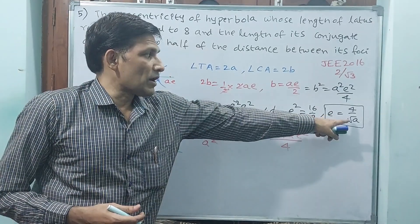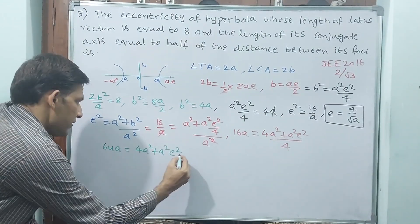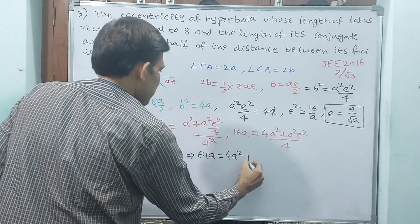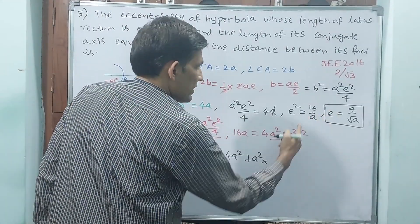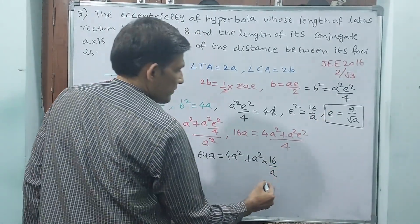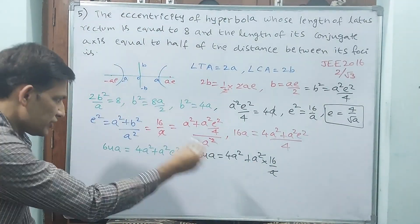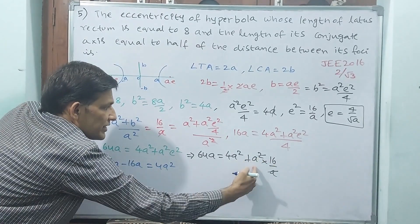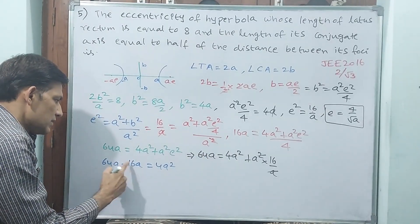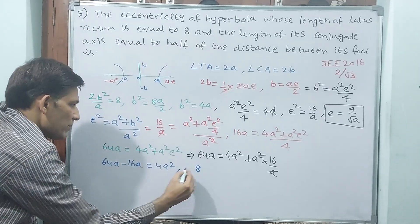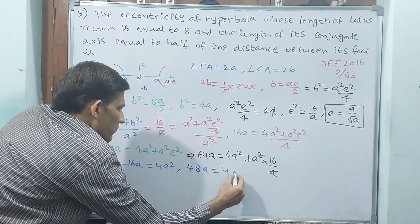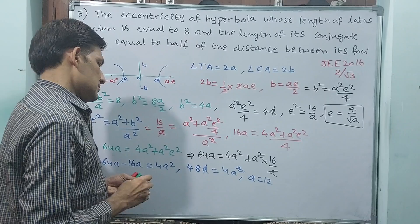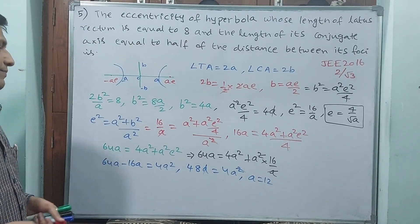A and A you cancel out. 16 is equal to 4A square plus A square E square by 4. Or 64A is equal to 4A square plus A square E square. 16A you send this side, 64A minus 16A is equal to 4A square. 64 minus 16 is 48. 48A is equal to 4A square. A you cancel out. A is equal to 12.